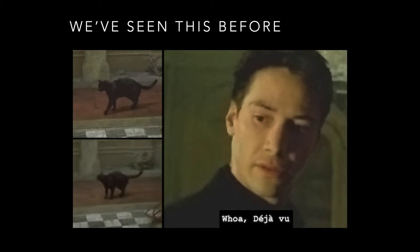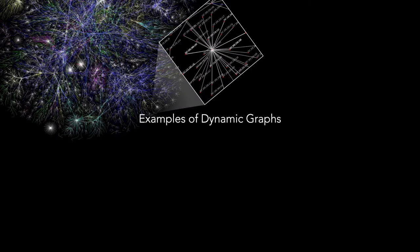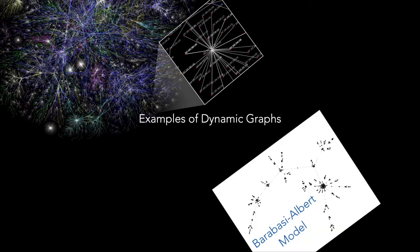This is not new. We've seen this before in the Barabasi-Albert model, where we've talked about nodes that come into the graph and building time series comparing behaviors from one point to another. The BA model is a very clear example of a dynamic graph, where new nodes come in and are parameterized by some value M that says how many new edges are created to existing nodes based on preferential attachment.